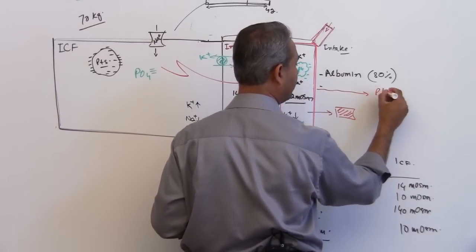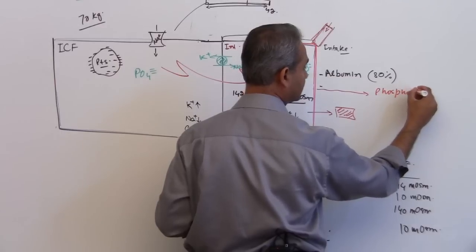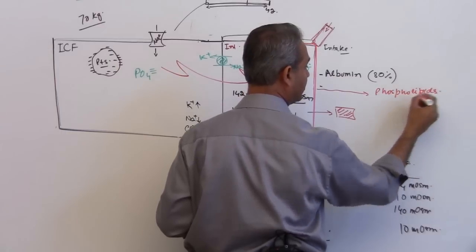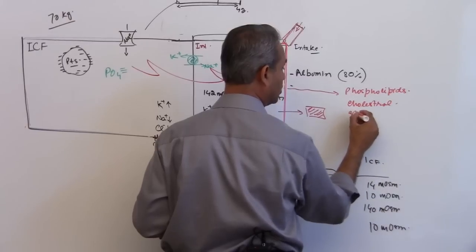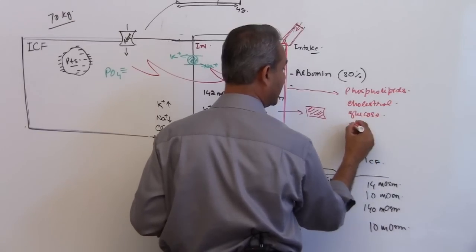Substances which are not electrolytes are phospholipids, cholesterol, glucose, and bile salts.